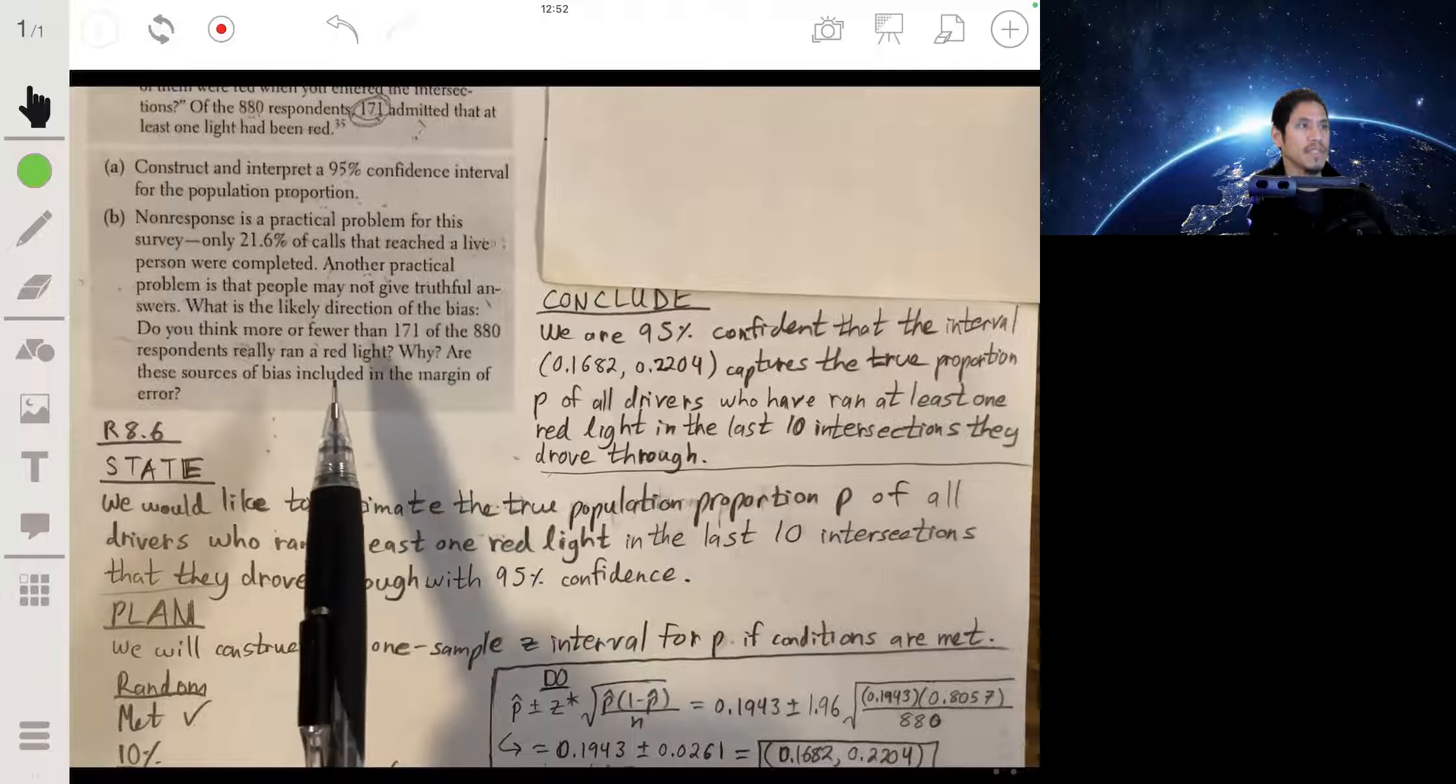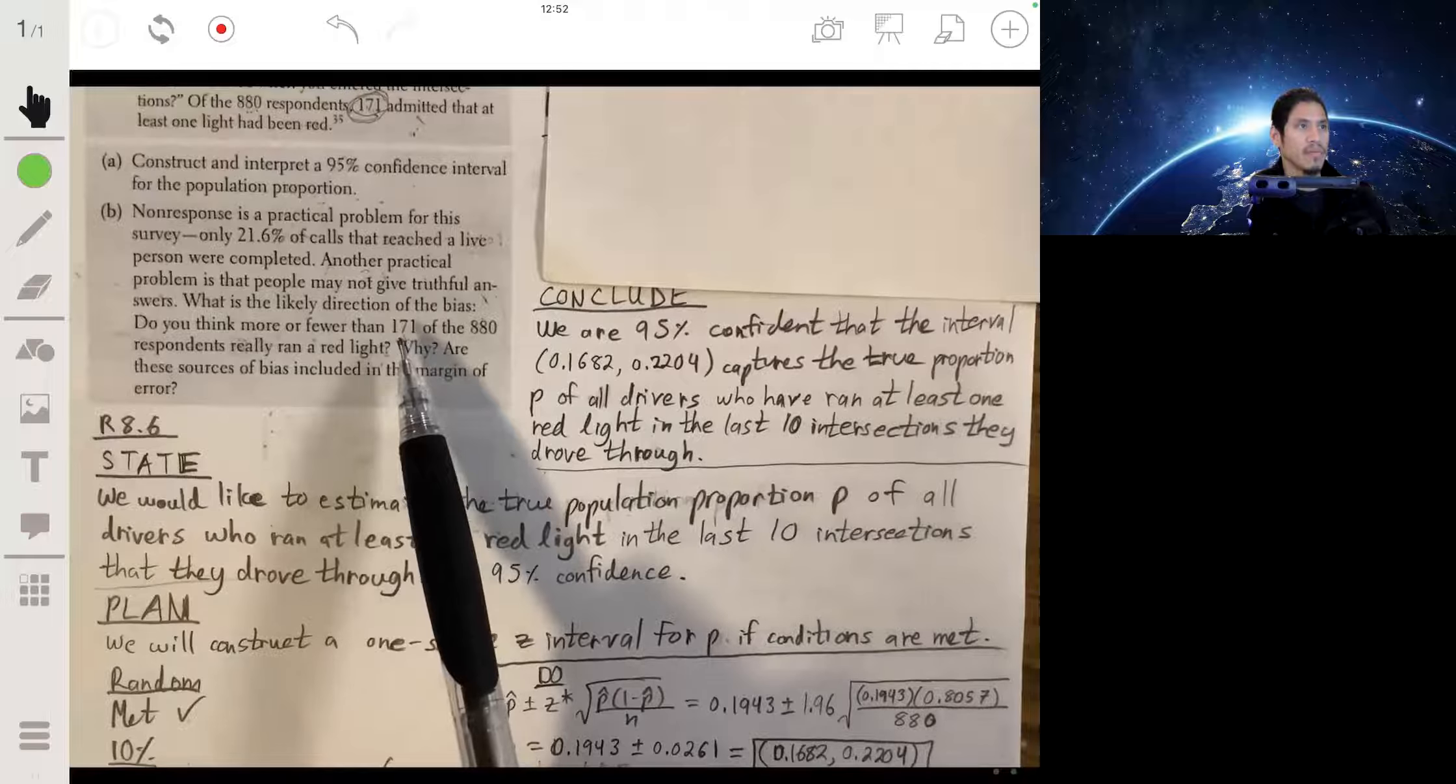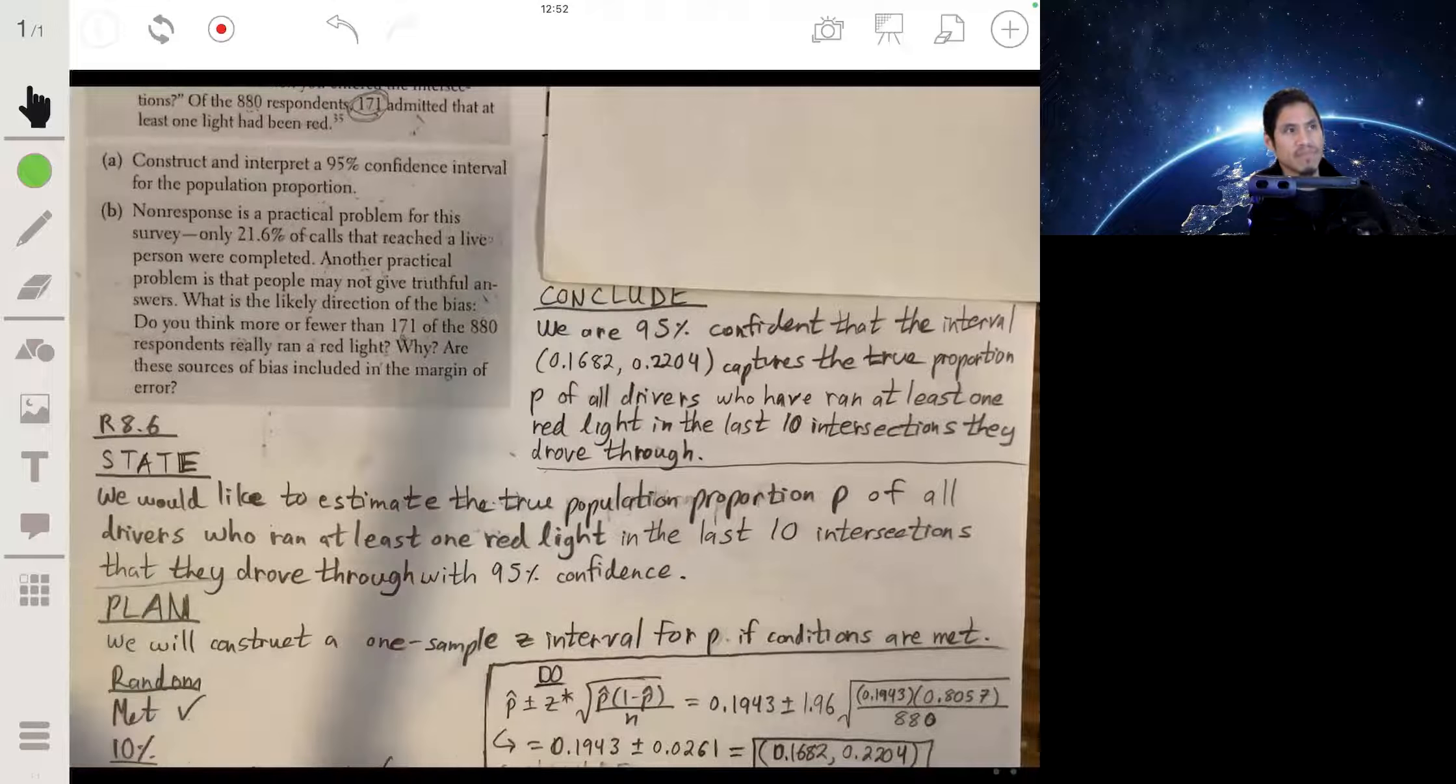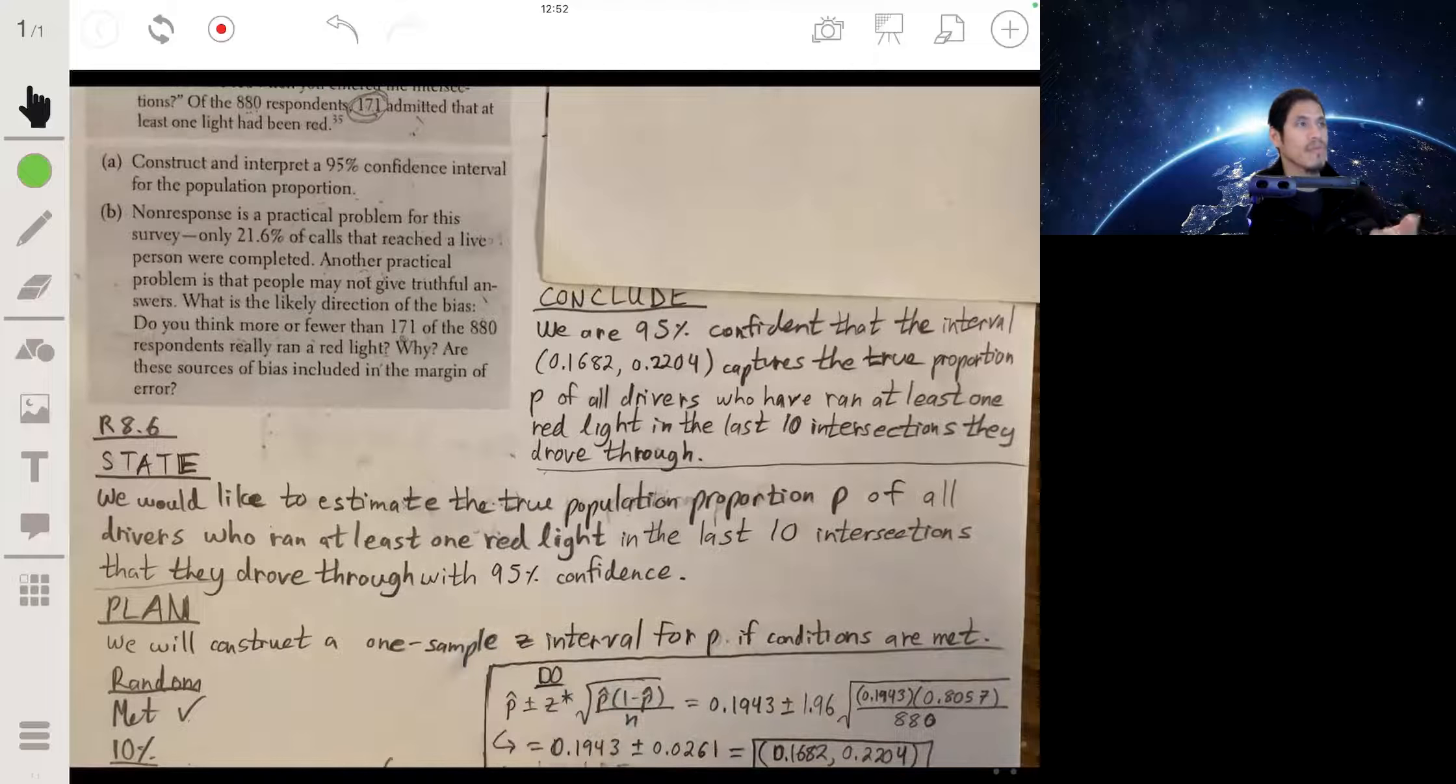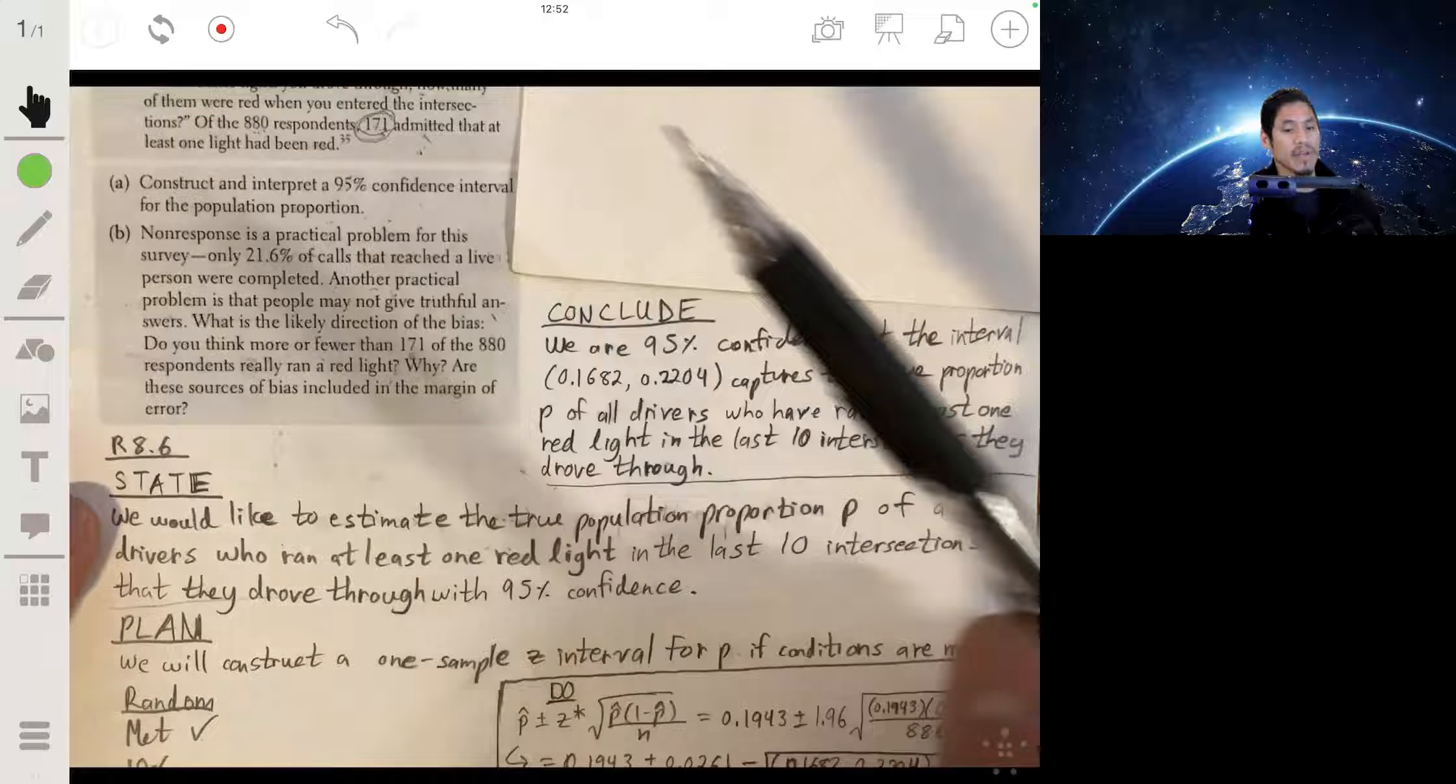And are these sources of bias included in margin of error? So essentially it's saying, do we think this 171 is the truth, like just the actual amount of those 880 that actually ran one red light or more? And when you think about it, it's probably going to be less because people are probably more likely to lie about this. People don't want to admit that they ran a red light because they're going to have to pay a ticket or whatever. They're worried about getting in trouble or anything. So even though some did admit the true value, it may be higher, maybe larger than that.